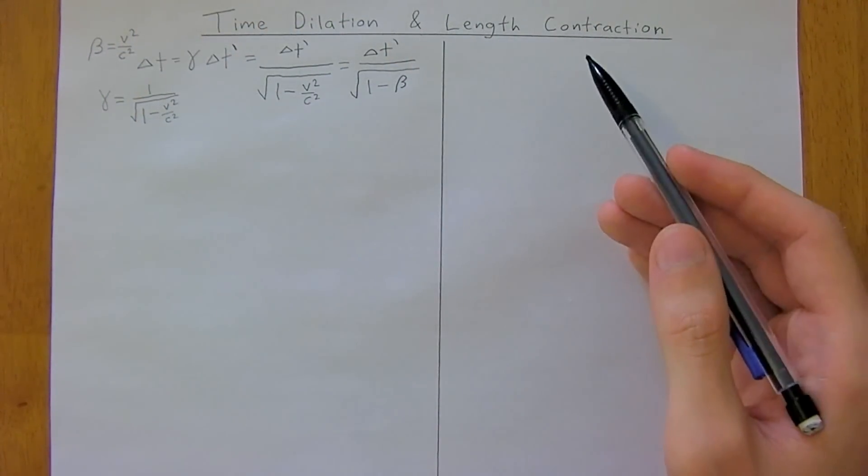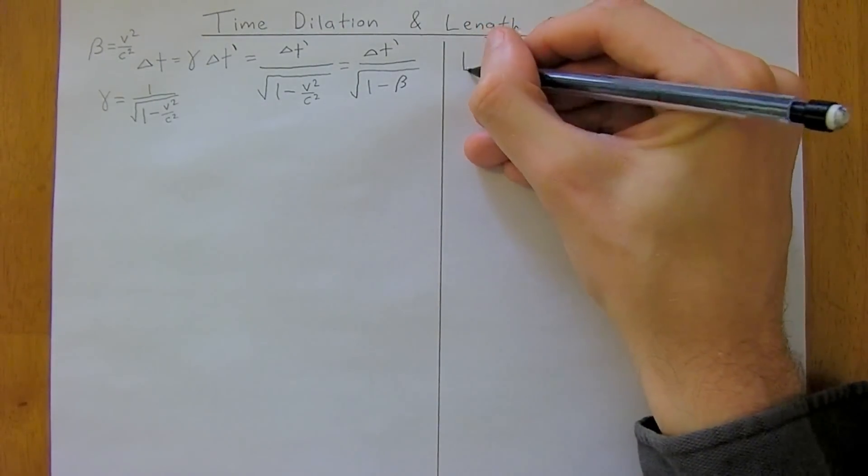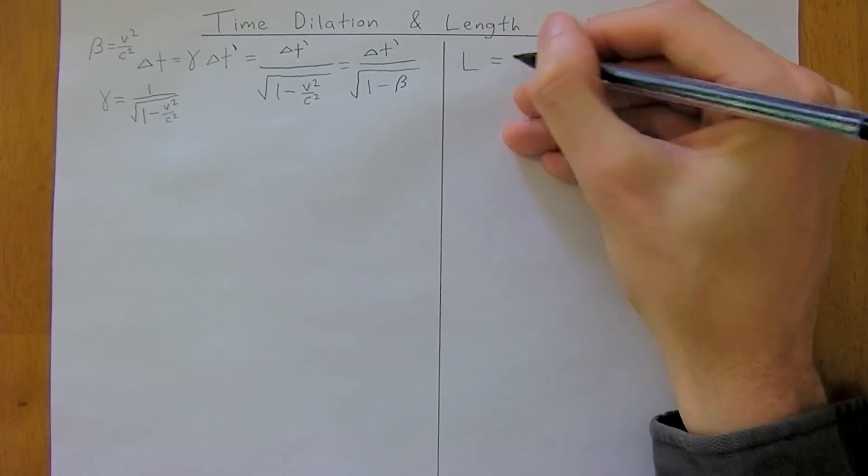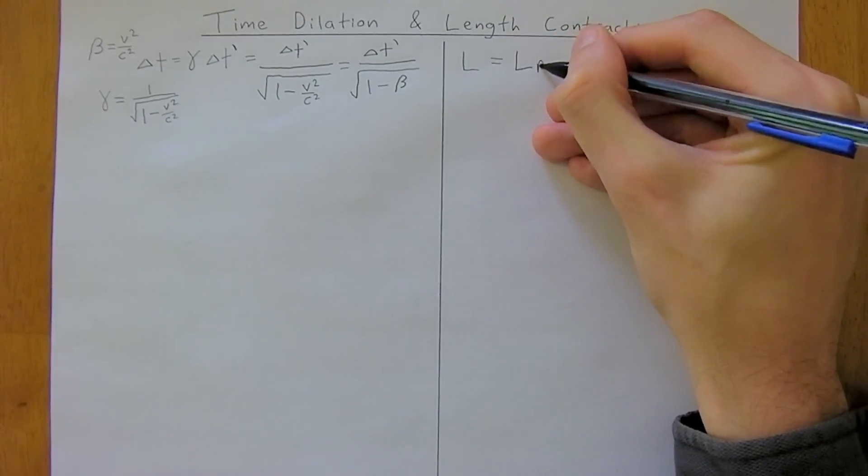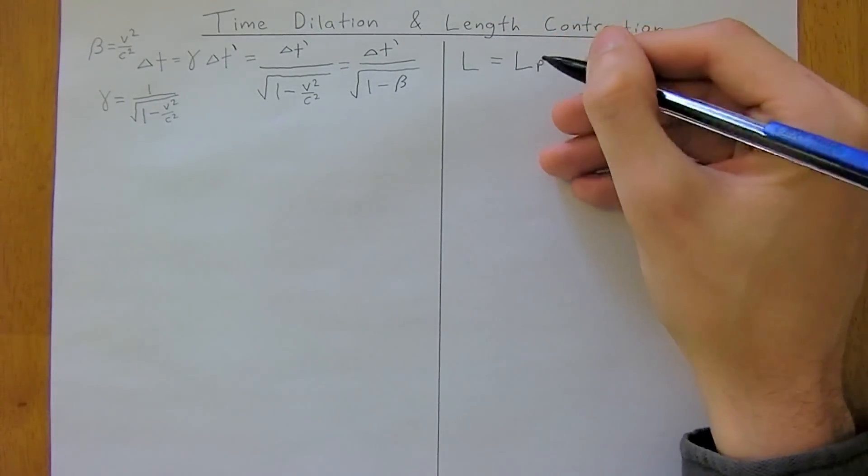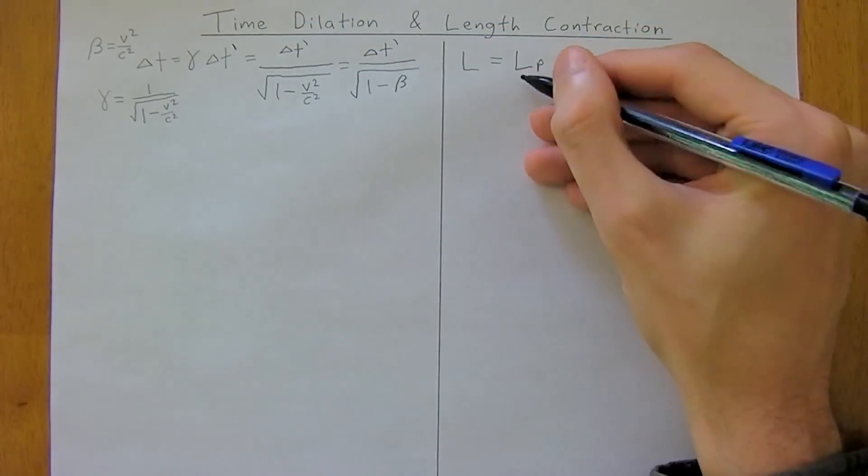And then we also get length contraction. And this is very similar. So length is equal to your length proper or length naught. Actually this is time proper, time naught. There's two different ways they represent it.